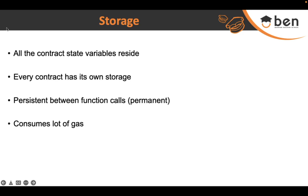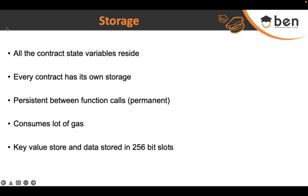Since we are using storage space to store data forever, it costs a lot of gas. While it is desirable to have data stored permanently on the blockchain for easy access, it comes at a cost. Writing one word of 256 bits (32 bytes) to storage costs almost 20,000 units of gas, which is very expensive. That is why we need to judiciously use the storage area and only store variables that genuinely need to be stored permanently.